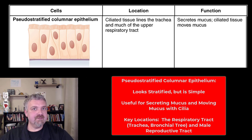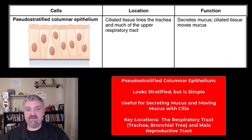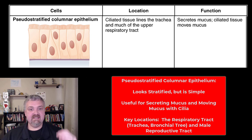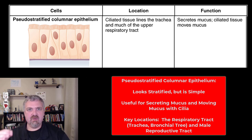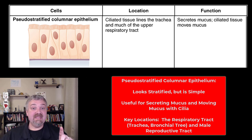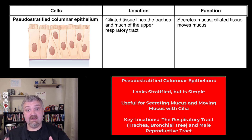Pseudo means false or fake. So pseudo-stratified columnar epithelium looks like it's stratified, but it's not. The reason is you can see how the nuclei are scattered in that image — some are high, some are low. So if you look at the nuclei of the cells, it looks like there's more than one layer. But each of those cells is attached to the basement membrane. That's what it means to be pseudo-stratified columnar.